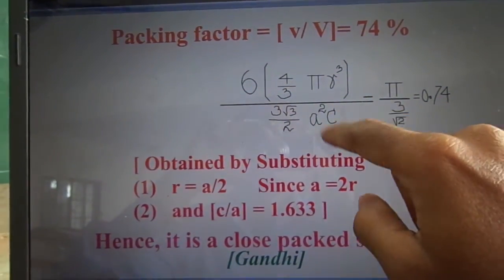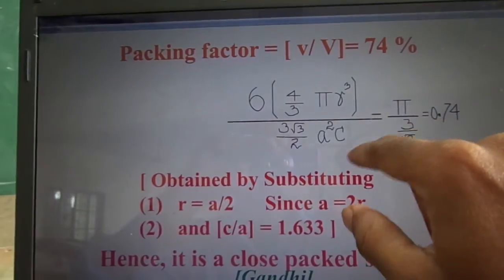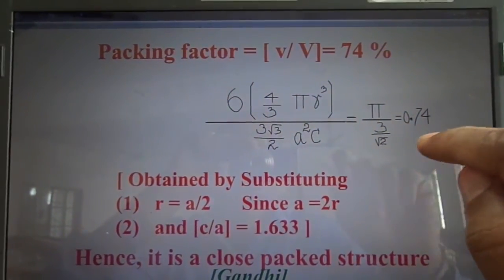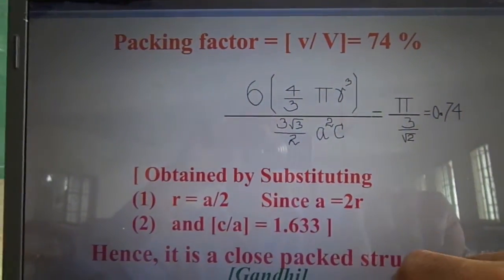So c by a is the only unknown thing. Rest of them are simply numbers. So c by a is substituted with 1.633. That is c by a ratio. And that leads to 74%.